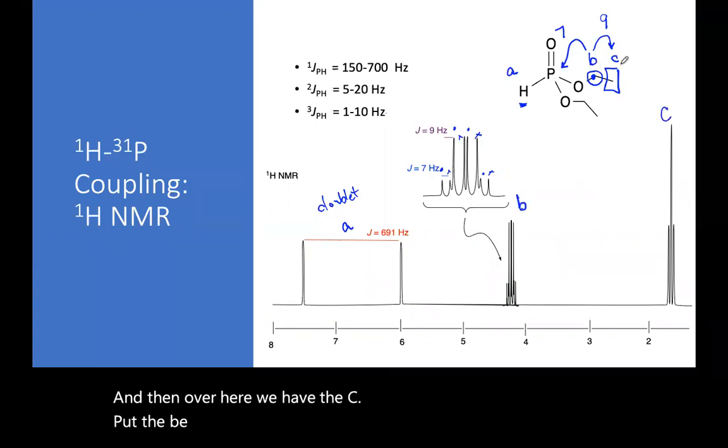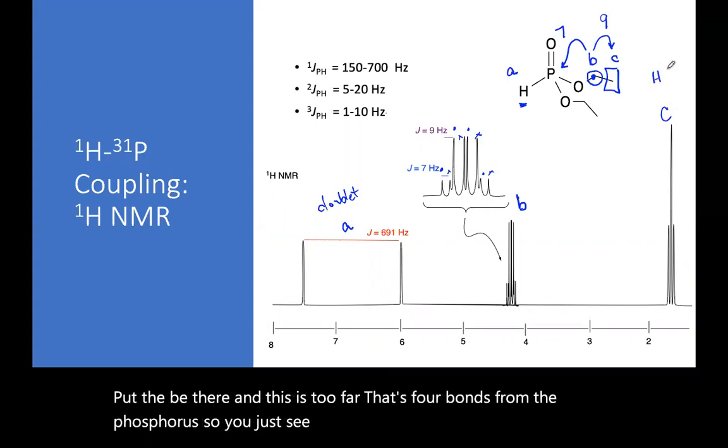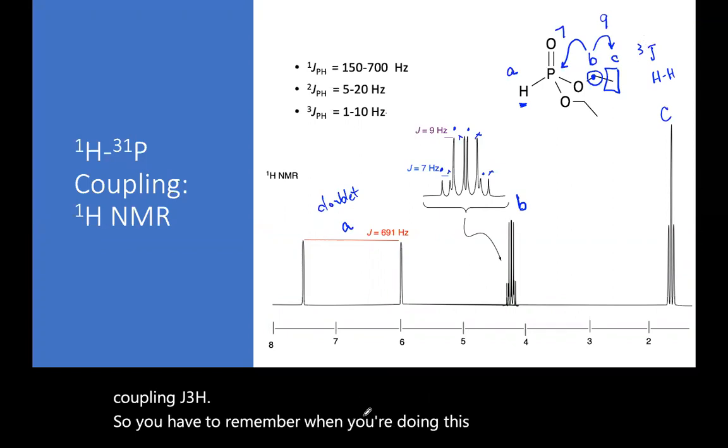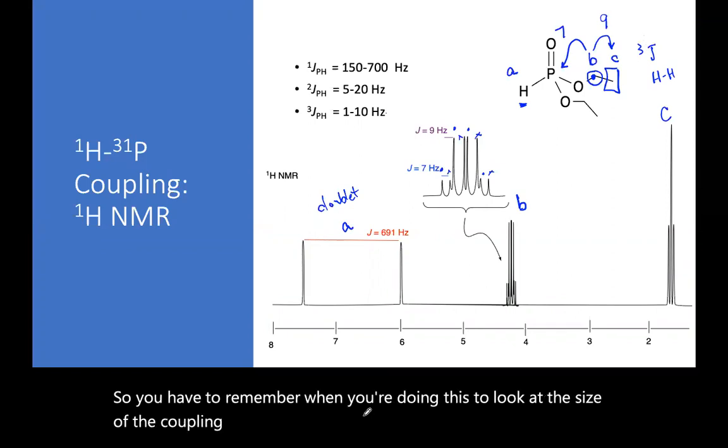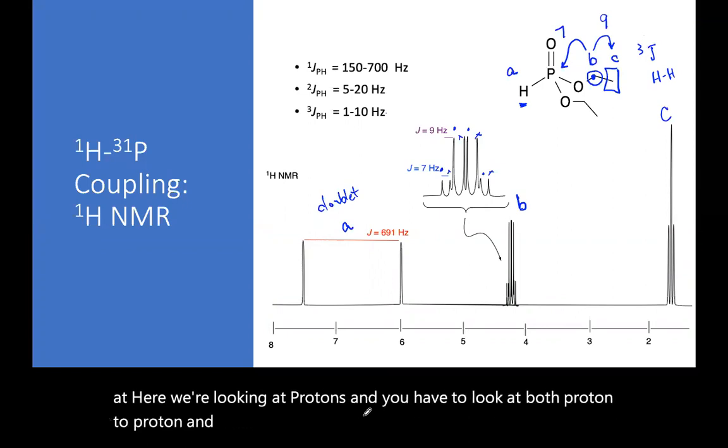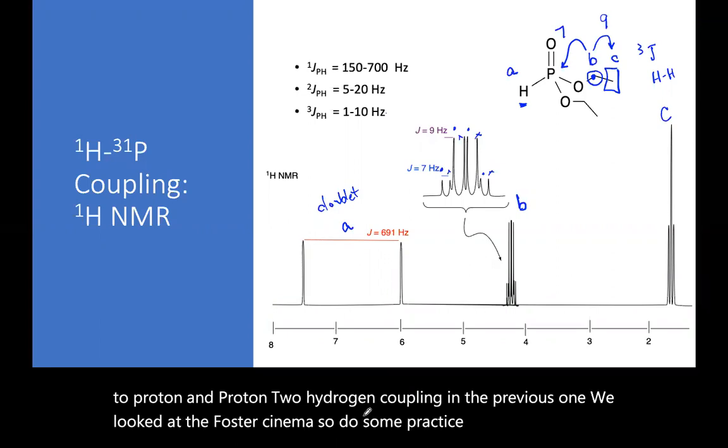And then over here we have the C, put the B there. And this is too far. That's four bonds from the phosphorus. So you just see the typical proton-proton three bond coupling, J3H. So you have to remember when you're doing this to look at the size of the coupling constants and remember which atom you're looking at. Here we're looking at protons and you have to look at both proton to proton and proton to hydrogen coupling. In the previous one, we looked at the phosphorus NMR. So do some practice. There's some in Canvas. There's some more in your workbook.